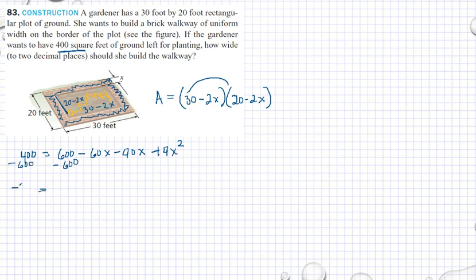If we subtract 400 from both sides of the equation, and this is zero equals 200 minus 100x plus 4x squared. If we divide both sides by 4, then I have x squared minus 25x plus 50 equals 0.